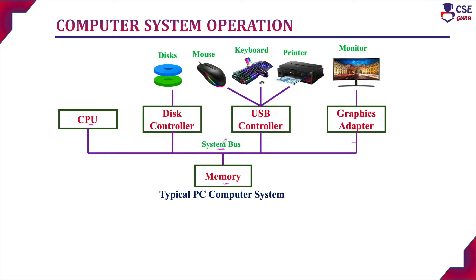The CPU and all its device drivers will execute in parallel. All the devices will execute and they will compete for the memory cycles in order to access memory. There will be a memory controller to synchronize all its activities. When there is a clash between the CPU and all its device drivers, the memory controller will regulate its activities.